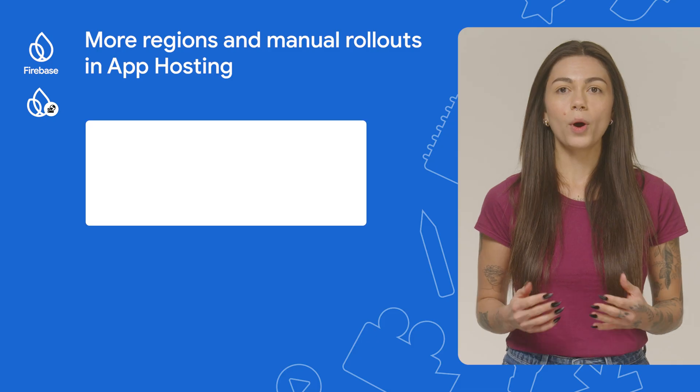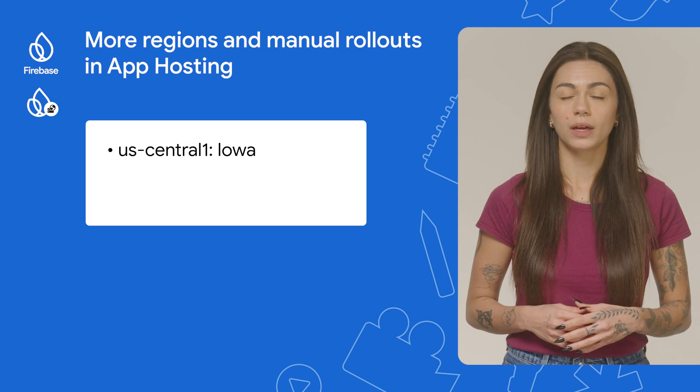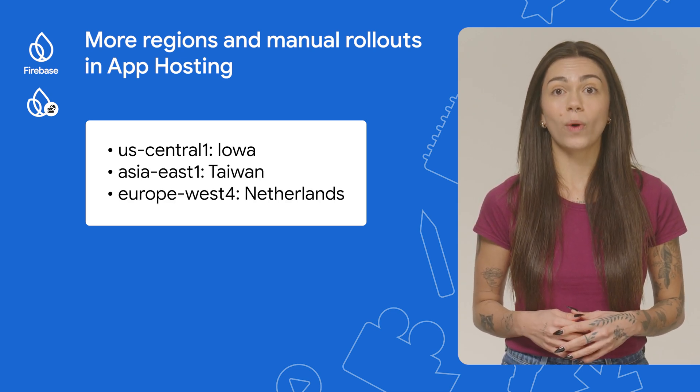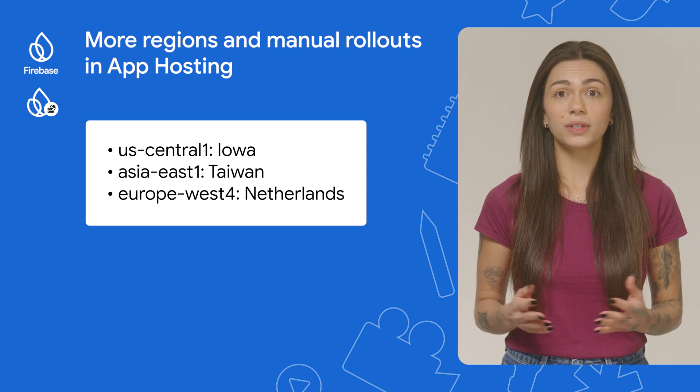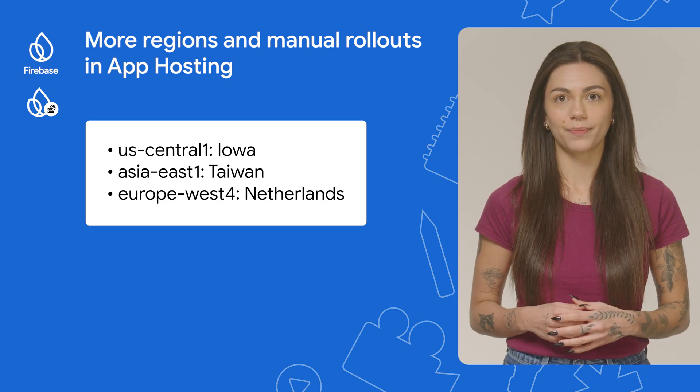Next, let's talk about App Hosting, our secure serverless framework that provides hosting for server-rendered web apps. When you deploy your web app using App Hosting, we create your backend resource in a specific location. When App Hosting was first launched, it only had support for backends in US Central 1. We have recently expanded to include Asia East 1 and Europe West 4. You can now choose any of these regions when you create an App Hosting backend from the console or using the Firebase CLI. Bringing the data geographically close to your users improves performance and reduces latency.